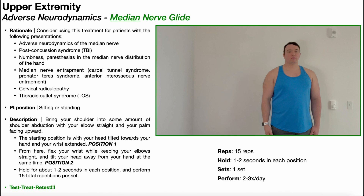In this video, I'll be explaining and demonstrating a couple variations of the median nerve glide. You should consider giving a median nerve glide for any patient with any of the following presentations. Number one is kind of obvious: adverse neurodynamics of the median nerve. Adverse neurodynamics is a very general umbrella term — not very specific — but any patient who has a positive result on the median nerve tension test should probably be given a median nerve glide.